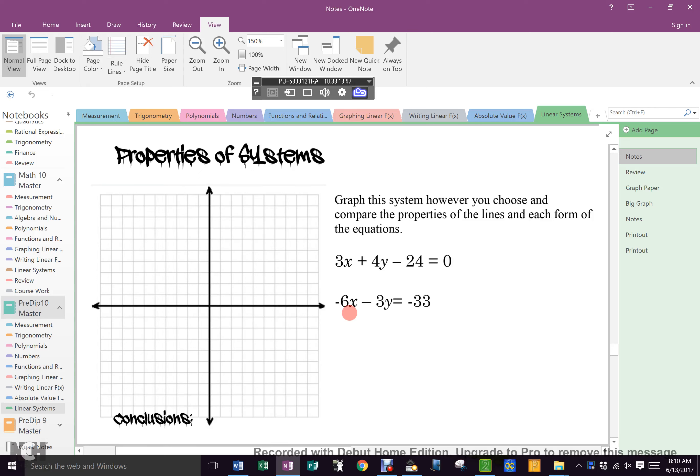Welcome to the page entitled Properties of Systems with the dripping marker font. Those first instructions are pretty easy. Graph it however you choose.